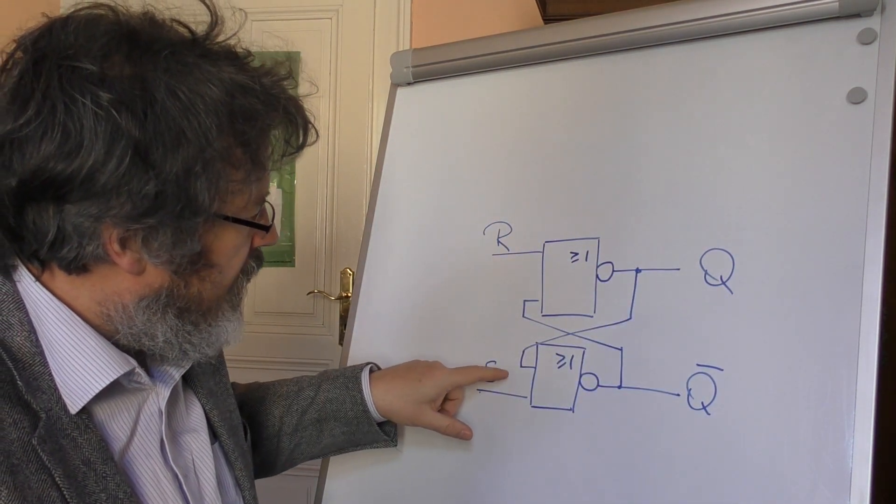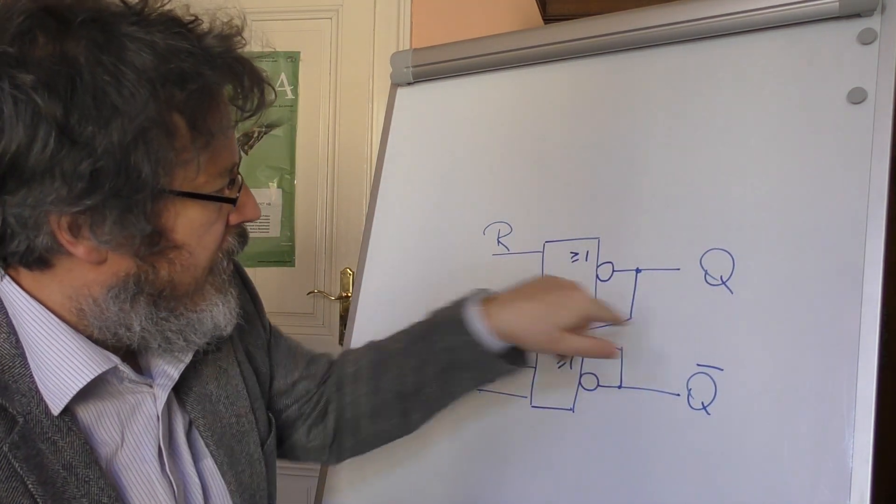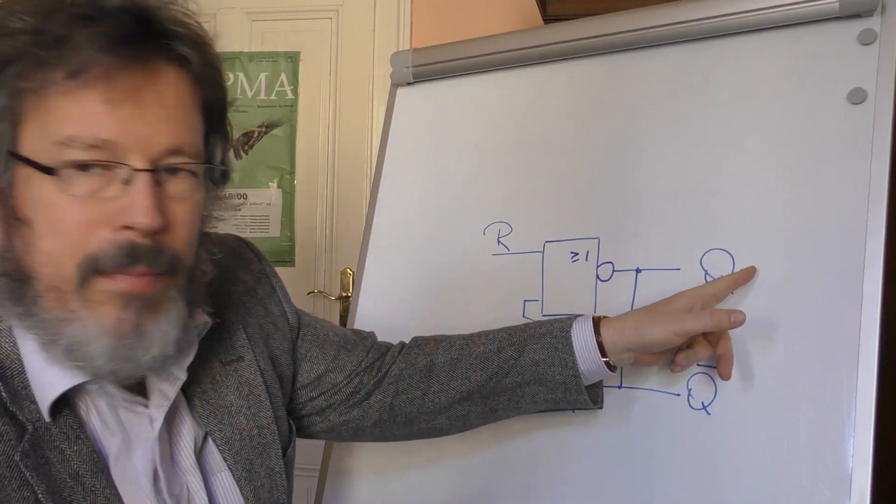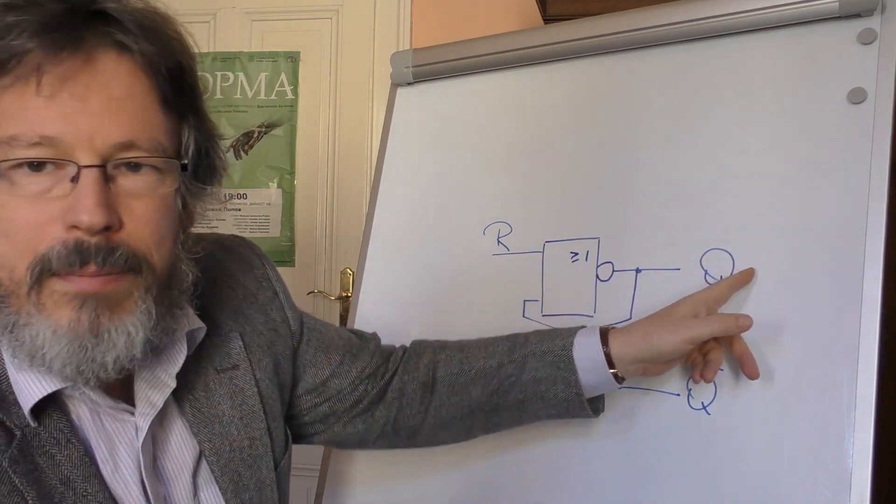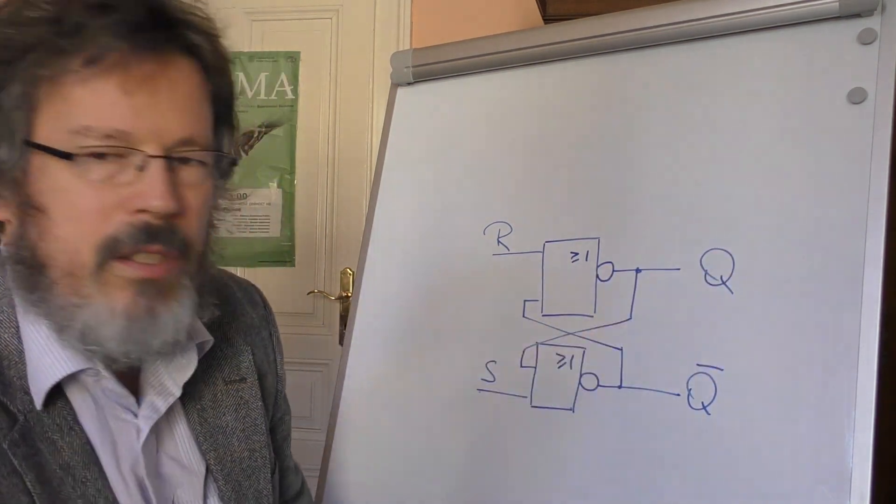And at the moment when the set line is set to 1, this storage cell at Q is a 1. And when the reset line is set to 1, then it changes to a 0.